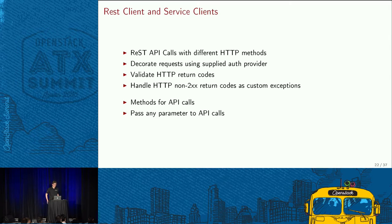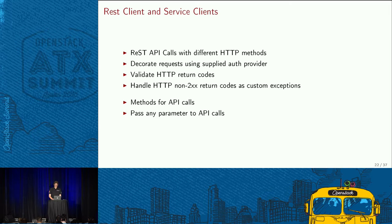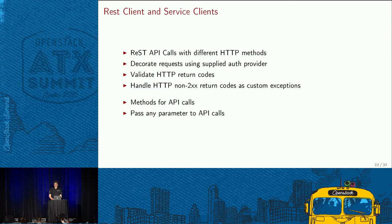To write a service client you can use the REST client interface, which provides methods to run all different HTTP methods, decorate them using the OAuth providers, provides validation of HTTP codes, and handling of non-200 return codes. A number of service clients for the core services are already part of the stable interface, with the remaining ones being moved over. They provide a single method for each specific API, allowing you to pass any parameter to the API call for fuzz testing, negative testing, or parameter manipulation.